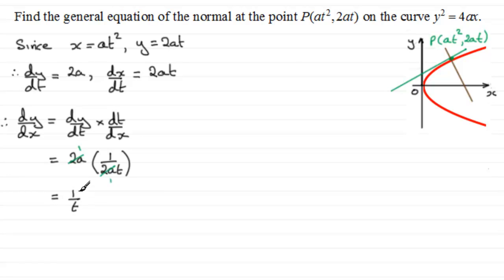Now remember that is the gradient of the tangent at any point on this curve. So when it comes to the gradient of the normal here, we need the negative reciprocal of this. So we can say that therefore the gradient of the normal, the normal at P, is the negative reciprocal minus t then.